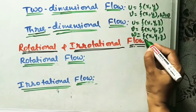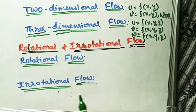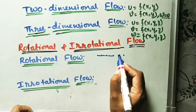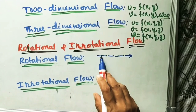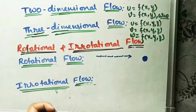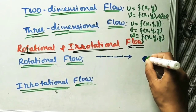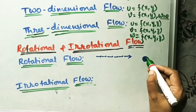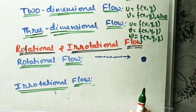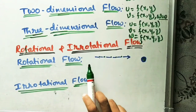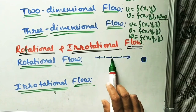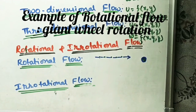In rotational flow, fluid particles are moving along the streamlines, and they are also rotating about their own axis. Every particle has an axis at its center — for a vertical orientation, there will be a vertical axis. When a particle rotates about its own axis, that type of flow is called rotational flow. In short: flow is along the streamline, and particles rotate about their own axis.